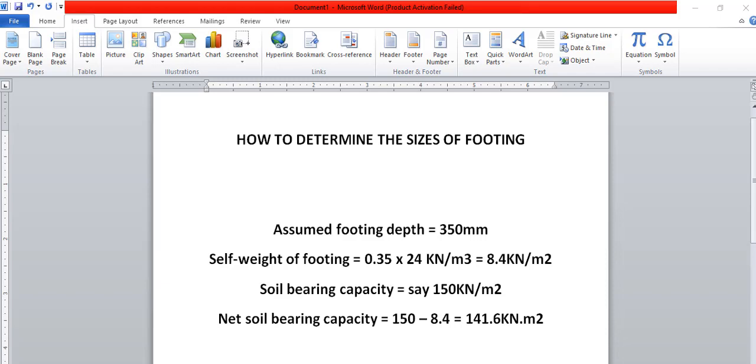Mostly we start by assuming the footing depth to use. There's a way we can learn the exact way, but based on experience we've known that for a single floor, 350mm should be okay. So that is what will be used in this example. The assumed footing depth we are assuming is 350mm thick footing.